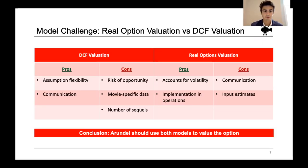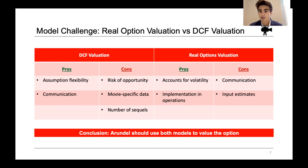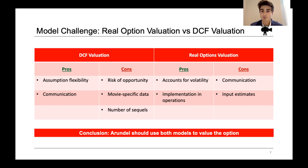Question 4 asks us to determine whether the real option valuation or the DCF valuation were superior. Ultimately we thought Arundel should use both, as they complement one another in getting to the true value of the business opportunity. For the DCF, the major upside was that it could account for the specific assumptions of Arundel's business opportunity — that Arundel would not exercise the option to create a sequel if there was a negative NPV — and we accounted for this by multiplying the probability of a successful sequel by the expected cash flows. As a communication tool, DCF was also more favorable than real options.